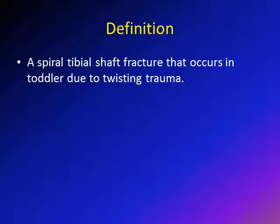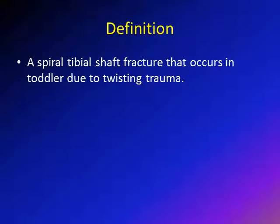What is toddler fracture? Toddler fracture is a spiral tibial fracture. It occurs usually in the lower one-third of the tibia and is caused by twisting trauma. It's a rotational injury that causes a spiral fracture of the tibia. It's a low-energy injury, common in patients in the toddler age group, typically between one year and three years old.